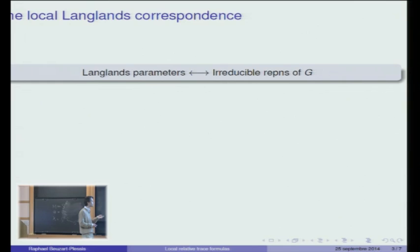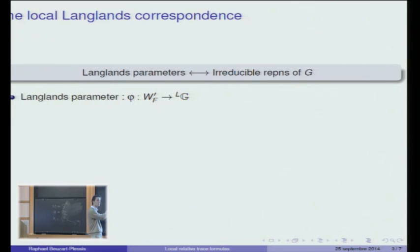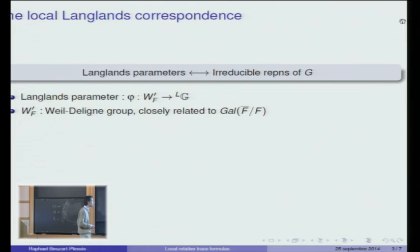Before telling you what the Langlands parameter is, let me emphasize one main point. In the definition of G, you have two main ingredients: the algebraic group bold G and the field F. The Langlands parameter is going, in some sense, to pull apart these two ingredients. Namely, a Langlands parameter is a homomorphism from one group to another. The first group, W' of F, is the Weil-Deligne group — all you need to know is that it only depends on the field F and is closely related to the absolute Galois group of F. This part will carry the information from the field F.